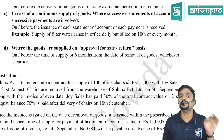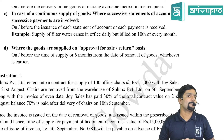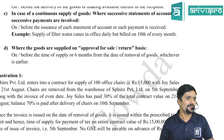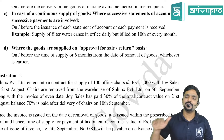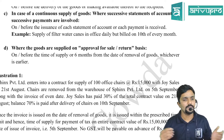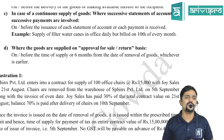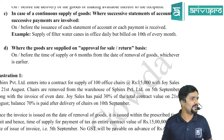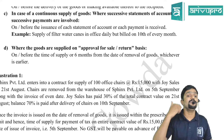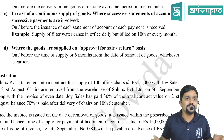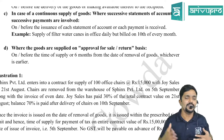If goods are returned, there is a procedure — you can issue a credit note or debit note, or claim a refund, or adjust it against future liability. If you have paid excess tax and the recipient returns goods, the supplier can adjust it in future liabilities. However, if the recipient has already claimed input tax credit on those goods, he must reverse it before the supplier can claim a refund or make an adjustment.